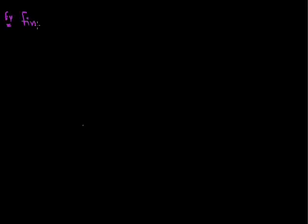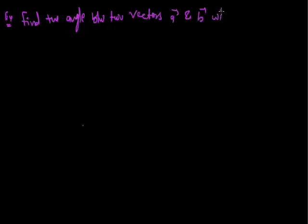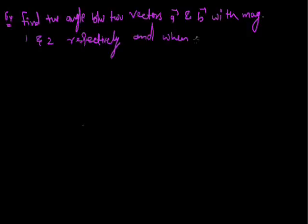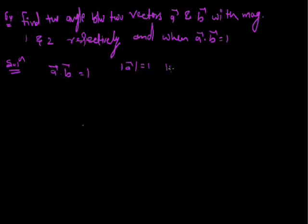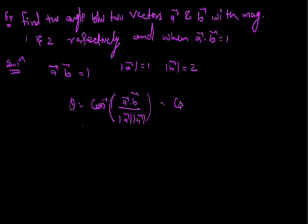Example 1: Find the angle between two vectors a and b with magnitudes 1 and 2 respectively, given that a·b = 1. Solution: θ = cos⁻¹(a·b / (|a||b|)) = cos⁻¹(1 / (1×2)) = cos⁻¹(1/2) = π/3.